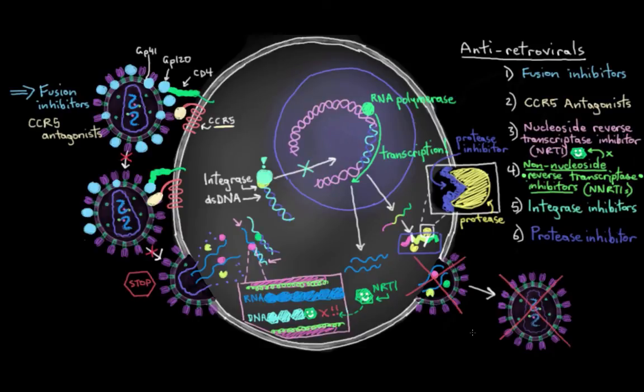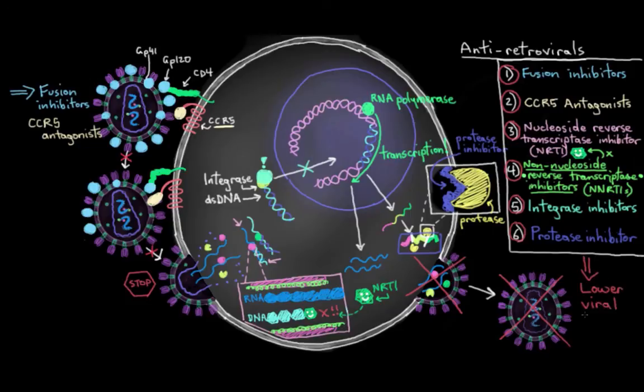So you can see that by using some of these drugs in combination, we can really minimize how much HIV can replicate within our bodies, because we can stop it from getting into our CD4 cells, which it kind of needs to replicate. And as you saw, we can stop it at a few other places as well. So ultimately you just end up with a way lower viral load in your bloodstream.